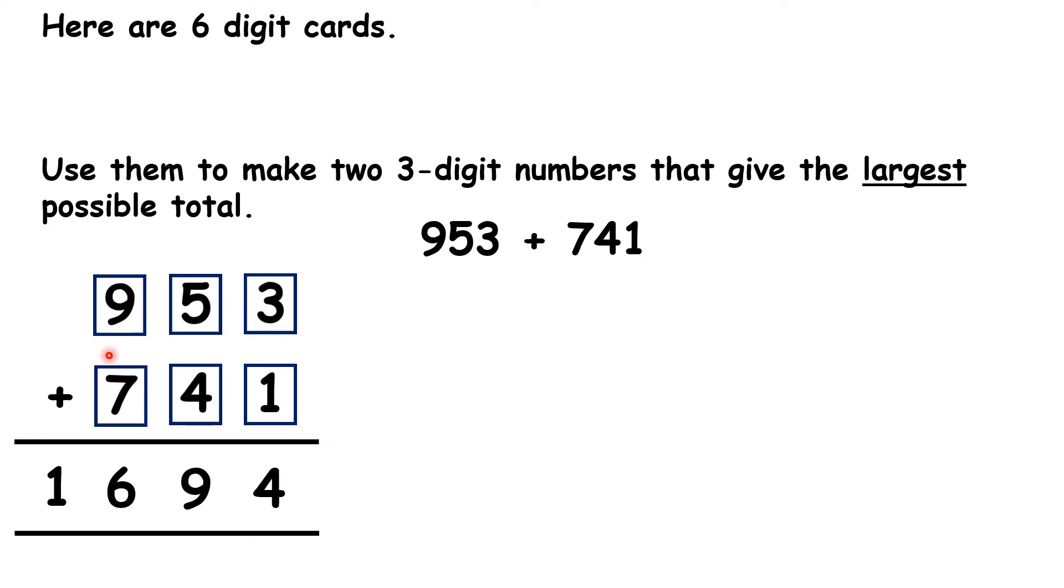We can't move any of these digit cards around to make a larger total. But we can move the digit cards around to make the same total. There are different solutions to this problem. Pause the video and see if you can work out all of the other numbers that we can make from these digit cards, which also add to make 1,694.